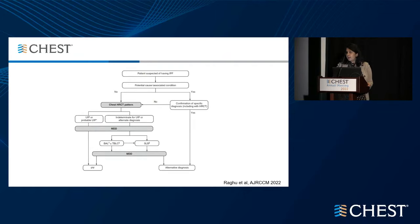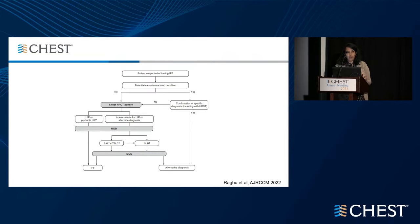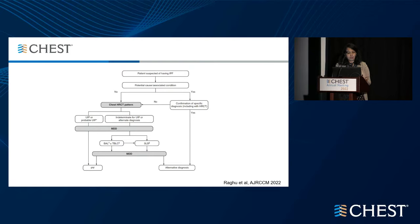In May 2022, new guidelines for the diagnosis of idiopathic pulmonary fibrosis were published. This is the treatment algorithm recommended for a patient where you suspect IPF — a patient who presents with dyspnea and cough, how you work them up, look at CT patterns to determine whether it's consistent with IPF, go through a multidisciplinary discussion, which is very important. There's additional discussion on transbronchial lung cryobiopsy versus surgical lung biopsy, as well as genomic classifier, and whether pathology or surgical lung biopsy was needed for the final diagnosis of IPF or other ILDs.